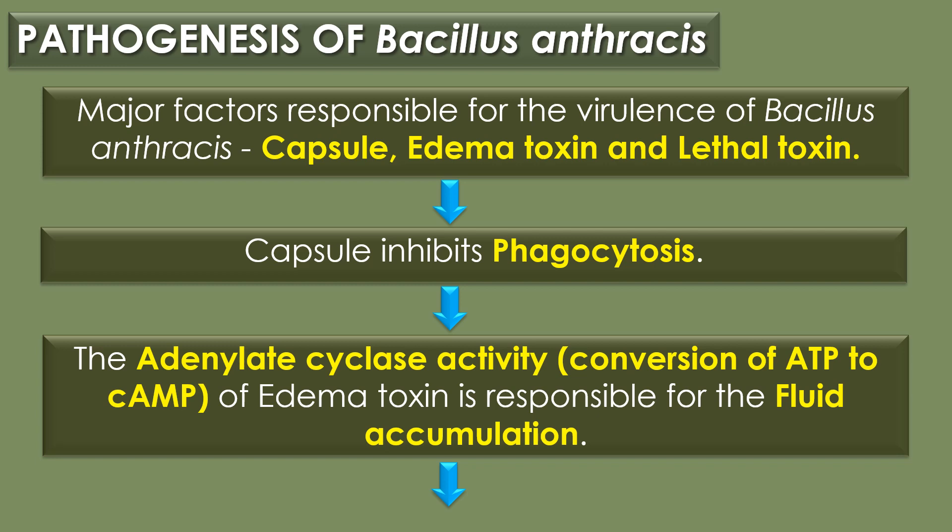The major factors responsible for the virulence of Bacillus anthracis are the capsule, edema toxin, and lethal toxin. The capsule inhibits phagocytosis, and the adenylate cyclase activity — that is, the conversion of ATP to cAMP — of edema toxin